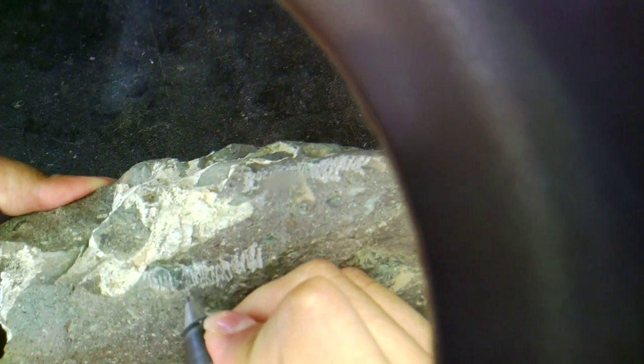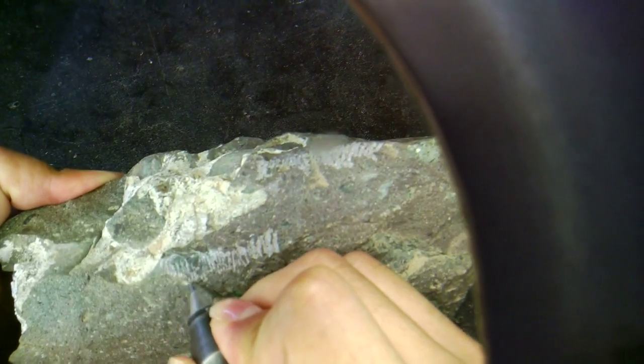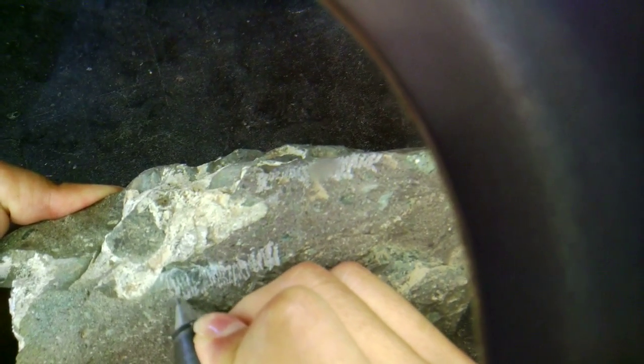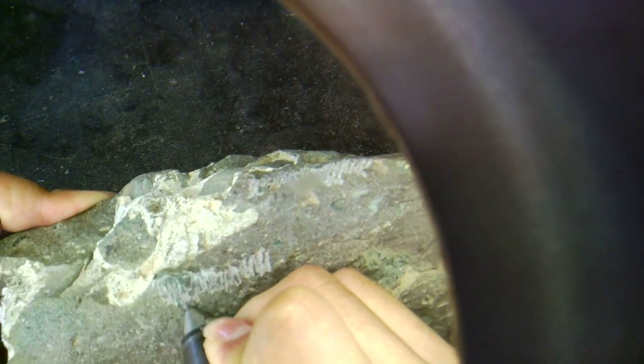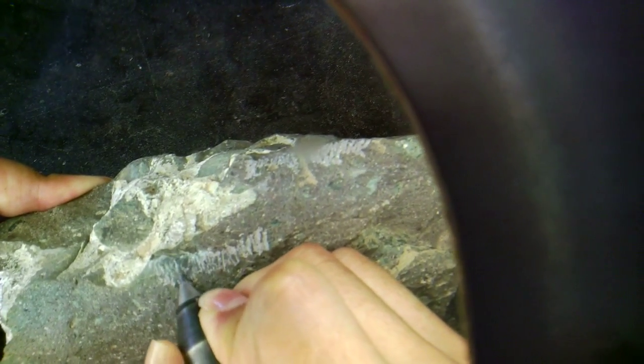And the reason why teeth are so important, especially in mammals, is because they give us a better idea of exactly what taxon this specimen is. You can identify it a lot easier. You can see there the rock coming right off.